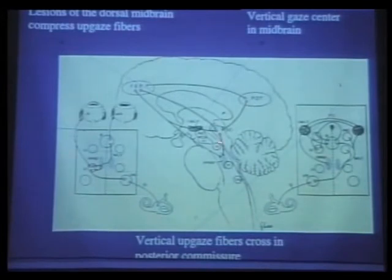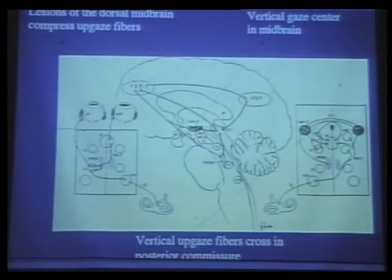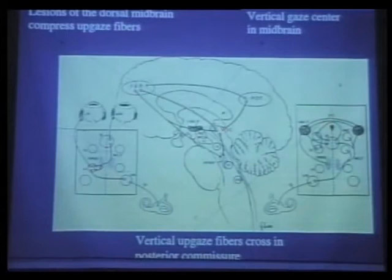The connections between the vertical gaze center and the nuclei can produce an inability to move the eyes for vertical gaze. Upgaze is a little different from downgaze because the vertical gaze pathway for upgaze crosses in the posterior commissure, meaning a single lesion there can cause an upgaze paralysis. That's why in dorsal midbrain syndrome, upgaze paralysis is far more common than downgaze paralysis—whether it's hydrocephalus pressing on the posterior commissure or a pineal tumor, the first thing affected is upgaze.